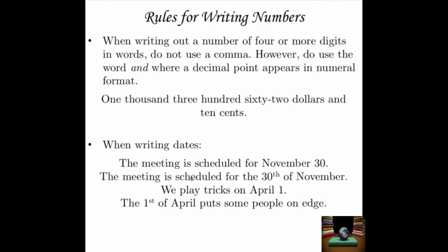When writing out a number of four or more digits in words, do not use a comma. However, do use the word AND where a decimal point appears in numeral format. So $1,362.10 would be written out as "one thousand, three hundred sixty-two and 10/100 dollars" — we put AND in place of that decimal point.